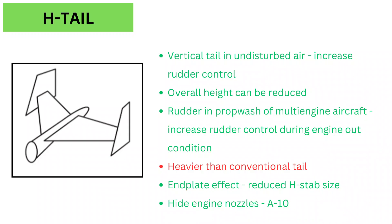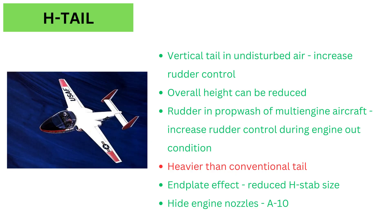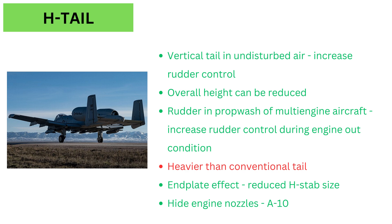H-tail: This type is used to place the vertical tails in undisturbed air during high angles of attack, or to position the rudders within the prop wash on a multi-engine aircraft to increase control during an engine-out condition. The overall height of the aircraft can be reduced by using this type when a single vertical tail is too tall. It is heavier than a conventional tail, but there is an end-plate effect on the horizontal tail, so the horizontal tail size can be reduced. On the famous A-10 aircraft, this type of tail was used to hide the hot engine nozzles from heat-seeking missiles.